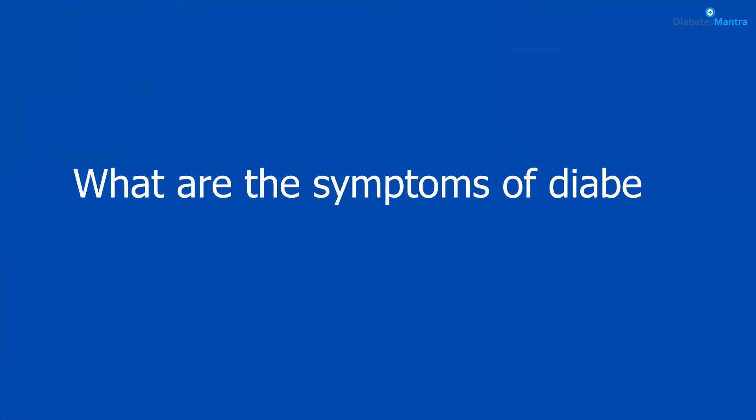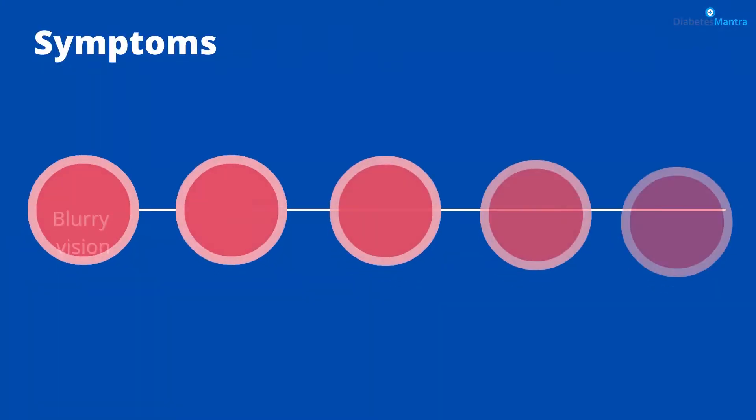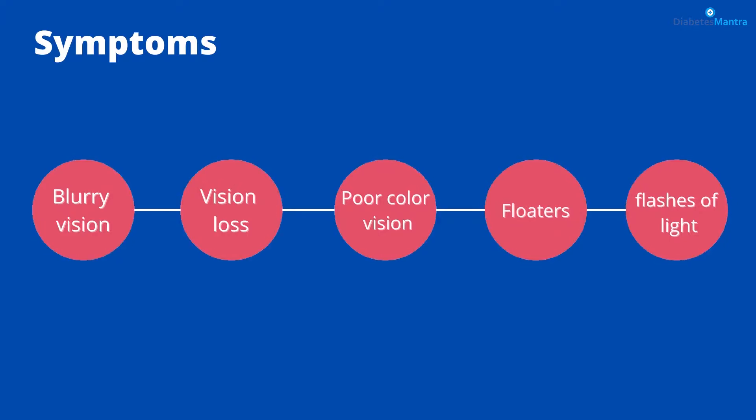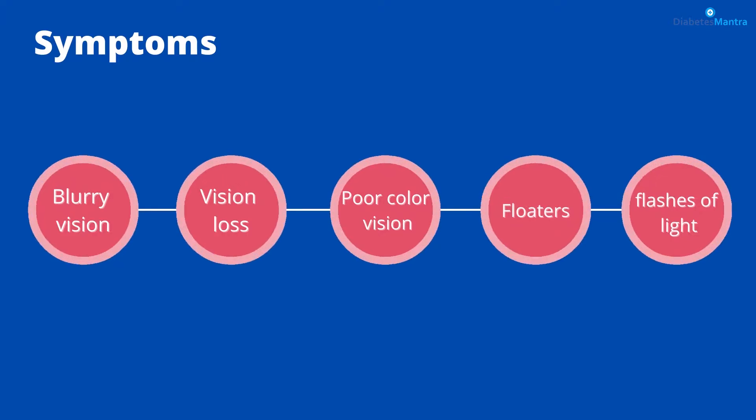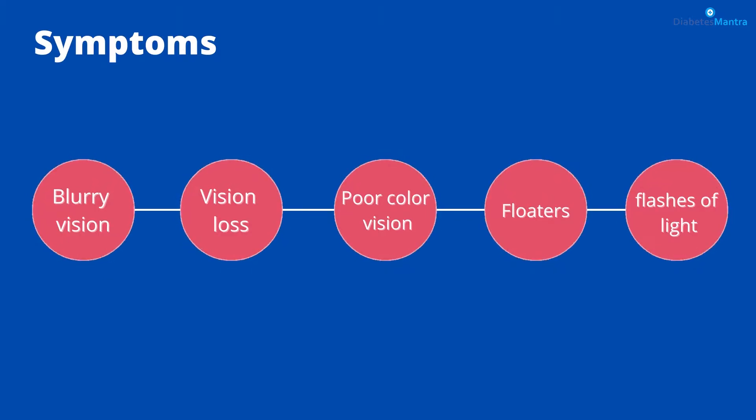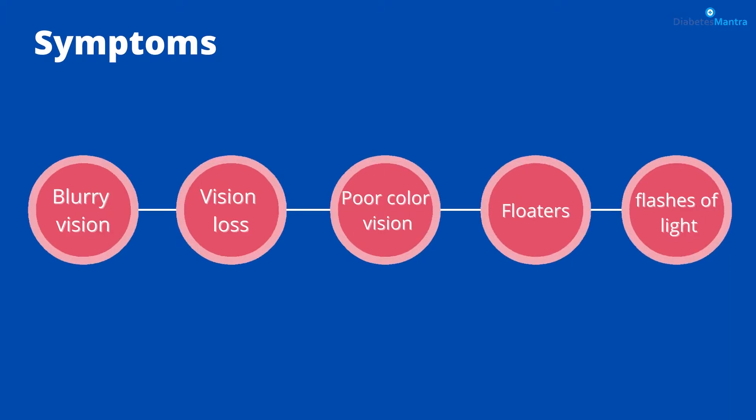When you know about the factors that increase your chances, you must also know the symptoms. Often, there are no early symptoms of diabetic eye disease. You may have no pain and no change in your vision as the damage begins to grow inside your eyes, particularly with diabetic retinopathy. When symptoms do occur, they may include blurry or wavy vision, frequent changing vision sometimes from day to day, dark areas or vision loss, poor color vision, spots or dark strings also called floaters, and flashes of light.